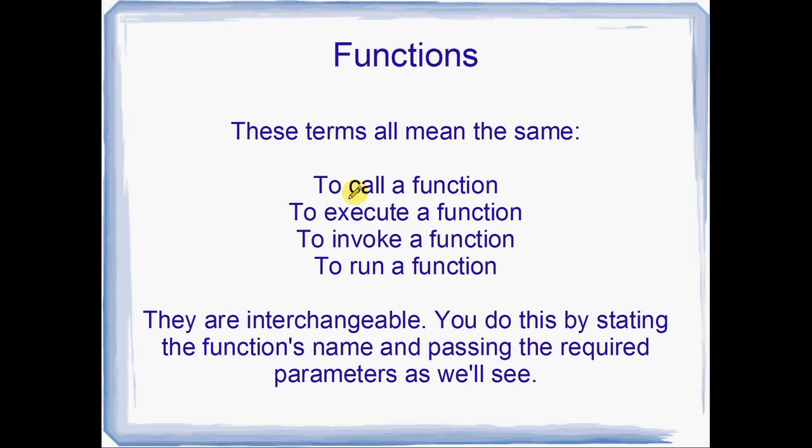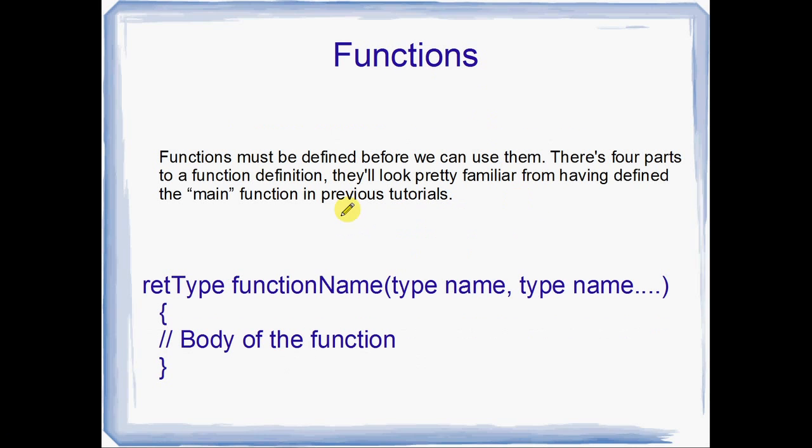Once we've defined a function, we call it. This is just to run the code of the function. You can refer to this as calling the function, executing the function, invoking the function or running the function. Basically what we want to do is stop executing code line by line and jump to the code of the body of the function. So the function is another control structure similar to loops.